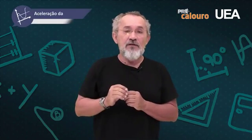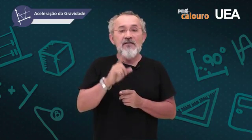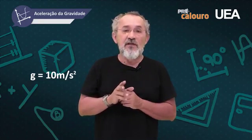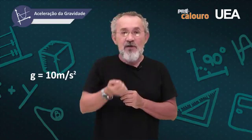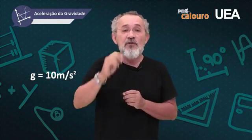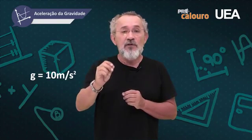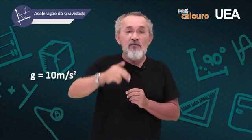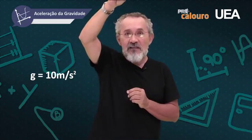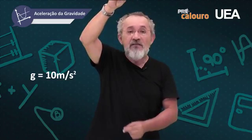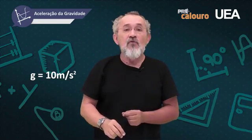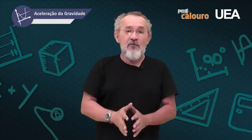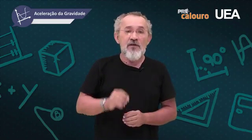Nas proximidades da Terra, a aceleração da gravidade é aproximadamente igual a 10 m/s². Isso significa que, nos movimentos verticais de baixo para cima, durante a subida a velocidade diminui 10 m/s a cada segundo — movimento uniformemente variado do tipo retardado. E durante a descida, se um corpo cai livremente a partir da velocidade inicial igual a zero, a velocidade aumenta 10 m/s a cada segundo. Para sedimentar essa ideia, vamos resolver um problema bem simples.